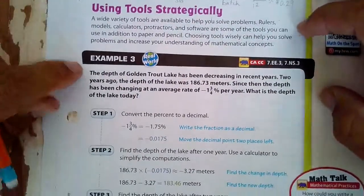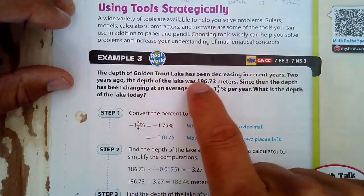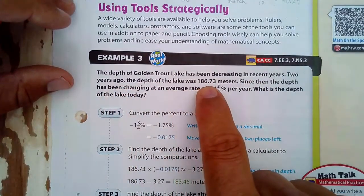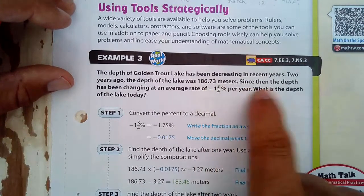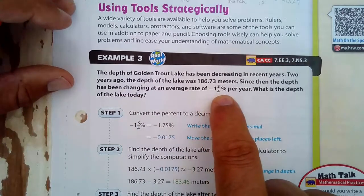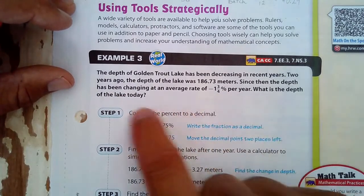In this problem here, the depth of Golden Trout Lake has been decreasing in recent years. Two years ago, the depth of the lake was 186.73 meters. Since then, the depth has been changing at an average rate of negative 1 and 3/4 percent per year. What is the depth of the lake today?